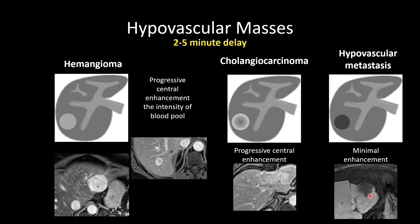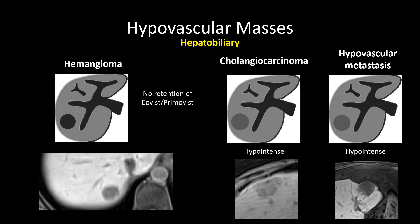In this delay, we see minimal peripheral enhancement of this GI primary adenocarcinoma metastasis. The enhancement pattern of a metastatic adenocarcinoma will be variable — this is a very hypovascular metastasis but could look very similar, if not identical, to the cholangiocarcinoma. In the hepatobiliary phase, we should see hypointensity uniformly across almost all hypovascular masses, whether benign or malignant.